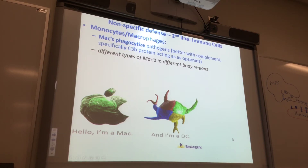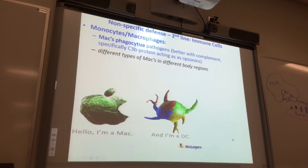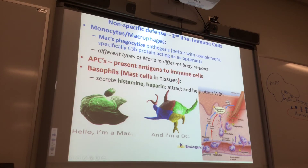Opsonization is like a glaze over the foreign invader. The opsonins you use are complement proteins. We talked about antigen-presenting cells presenting antigens, and basophils are mast cells in the tissue.